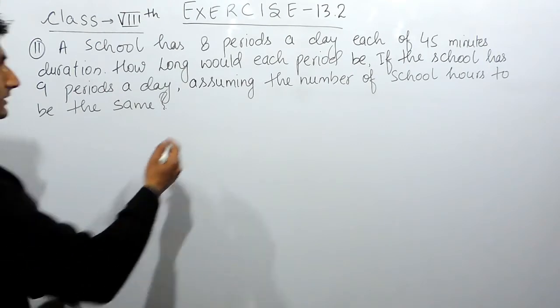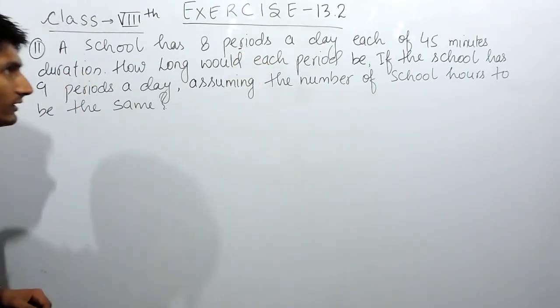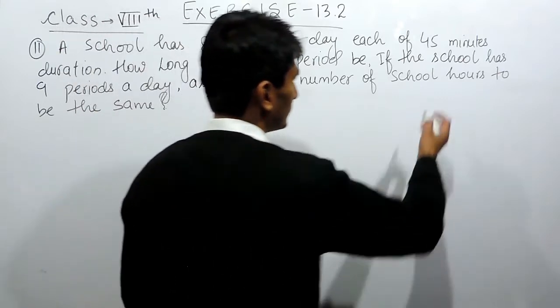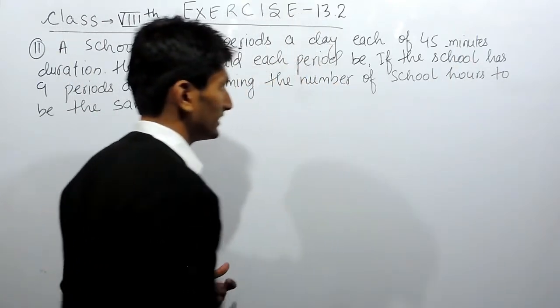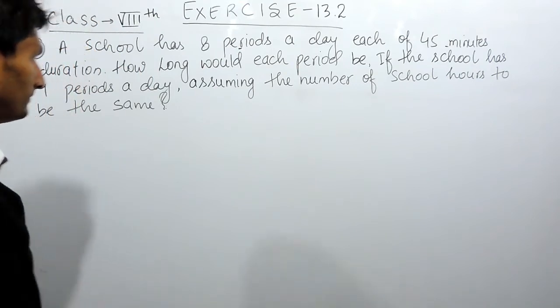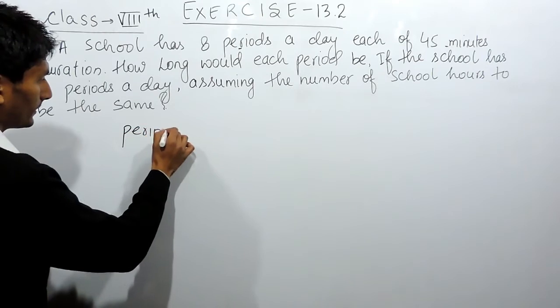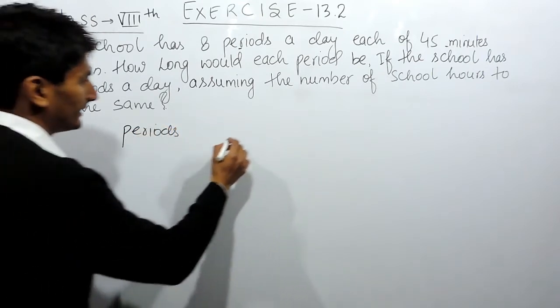First of all, find the number of parameters here. The first parameter is the number of periods, and the second is the duration of each period.